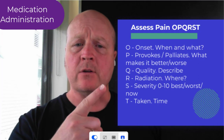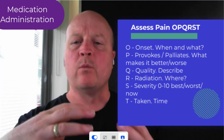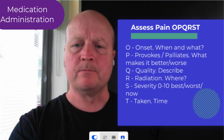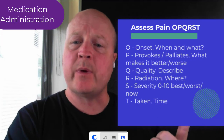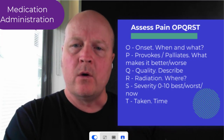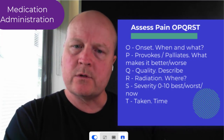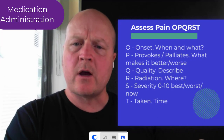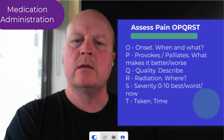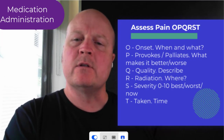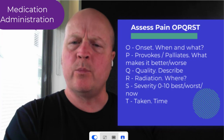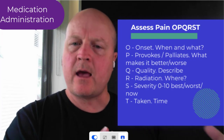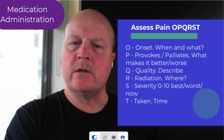So O is onset — when did it start and what were you doing when it started? P is provokes and palliates — what makes it better, what makes it worse? Q is quality — can you describe your pain for me? Then R is radiation — can you point to where you feel it, and does it radiate out from there or just stay in that one spot?